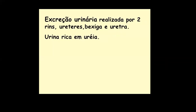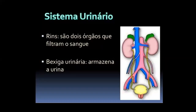O sistema excretor dos mamíferos tem dois rins, ureteres e bexiga urinária — a ave não tem bexiga para diminuir o peso. Da bexiga, a urina vai para a uretra e é eliminada. O rim vai evoluindo de peixe para anfíbio, réptil, ave e mamífero, ficando cada vez mais eficiente em termos de filtração.